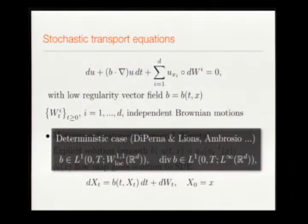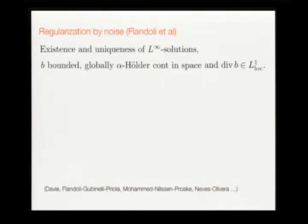Typically you get existence and uniqueness under the assumption of Hölder continuity in x of the velocity field — better than what you need in the deterministic case. This is called regularization by noise.